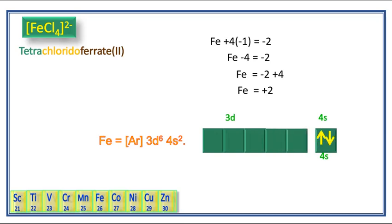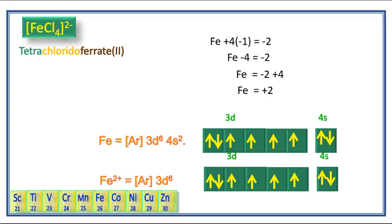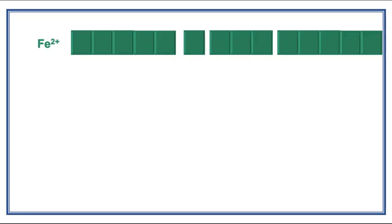But in this complex the iron is in plus 2 oxidation state. We have to remove 2 electrons from the 4s orbital. For hybridization, we should consider the 3d6 electronic configuration.